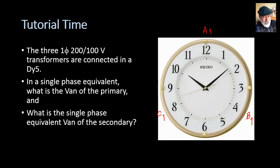The standard: primary A at 12, B at 4, C at 8. The secondary is group 5, so phase A of the secondary must be at 5 o'clock. The primary is connected in delta between 12 and 4 for transformer X — that is X1, the primary of transformer X — and that is 200 volts. If that line-to-line voltage is 200, then the phase-to-neutral voltage would be 200 divided by root 3. The secondary is connected in Y, so that voltage is just 100 volts.